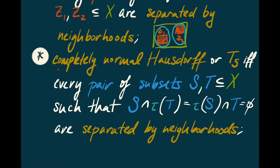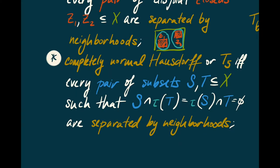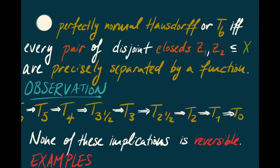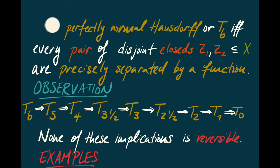Finally, X is perfectly normal Hausdorff, or T6, if and only if every pair of disjoint closed subsets Z1 and Z2 are precisely separated by a function — meaning there's a continuous map f: X → [0,1] such that the inverse image of 0 is Z1 and the inverse image of 1 is Z2.